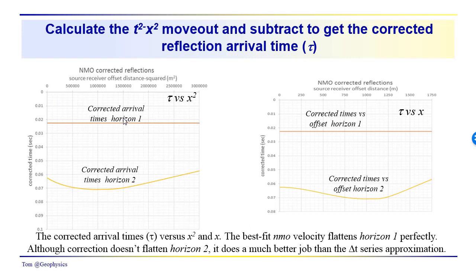For horizon 1, again, we had this constant velocity — just a single velocity — and we get a perfect correction, looking at a condensed time scale. This is perfectly flat. However, with the corrected arrival times for the reflection from horizon 2, you can see that we do have a sag in the t-squared x-squared coordinate system. This is actually t versus x-squared, so we're looking at time varying linearly but with source receiver offset squared, and you can see that we do get this sag.